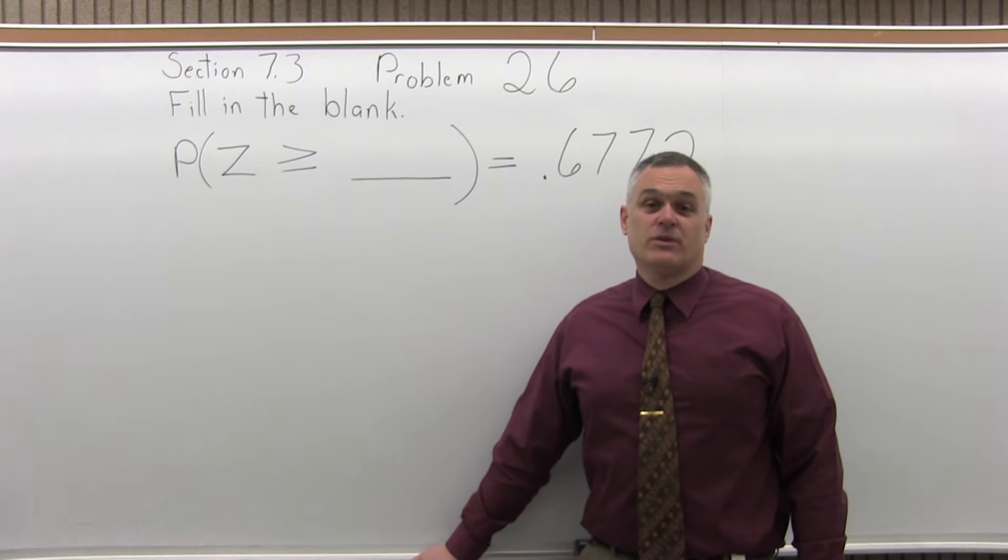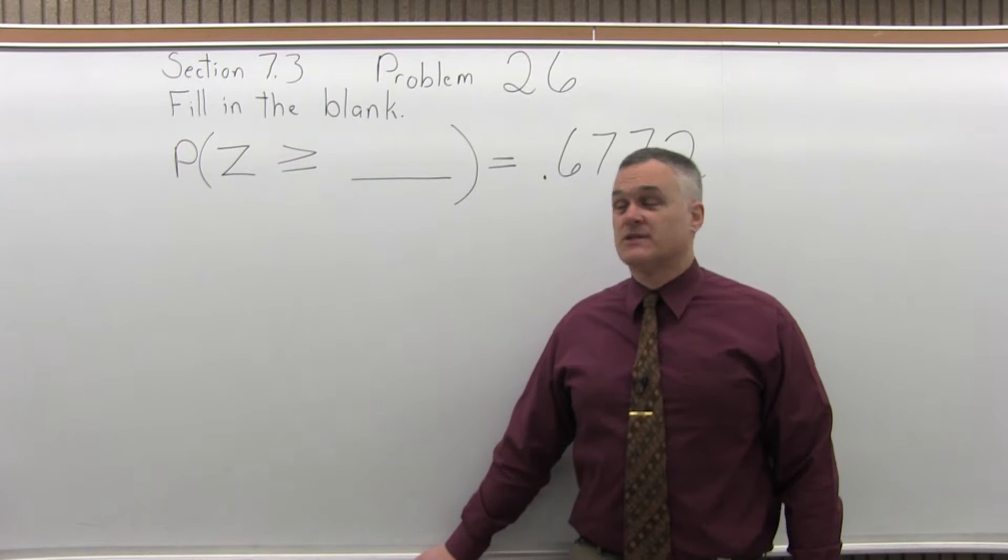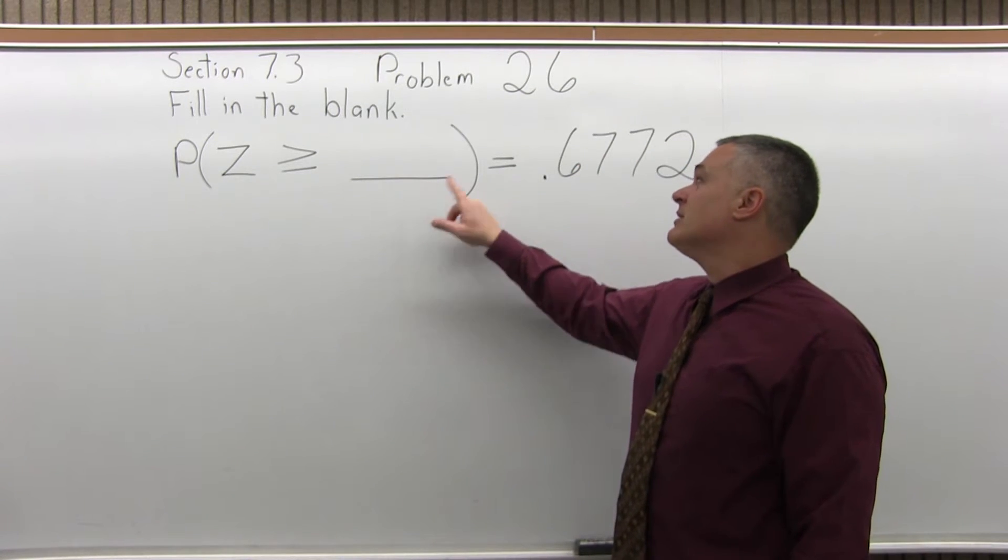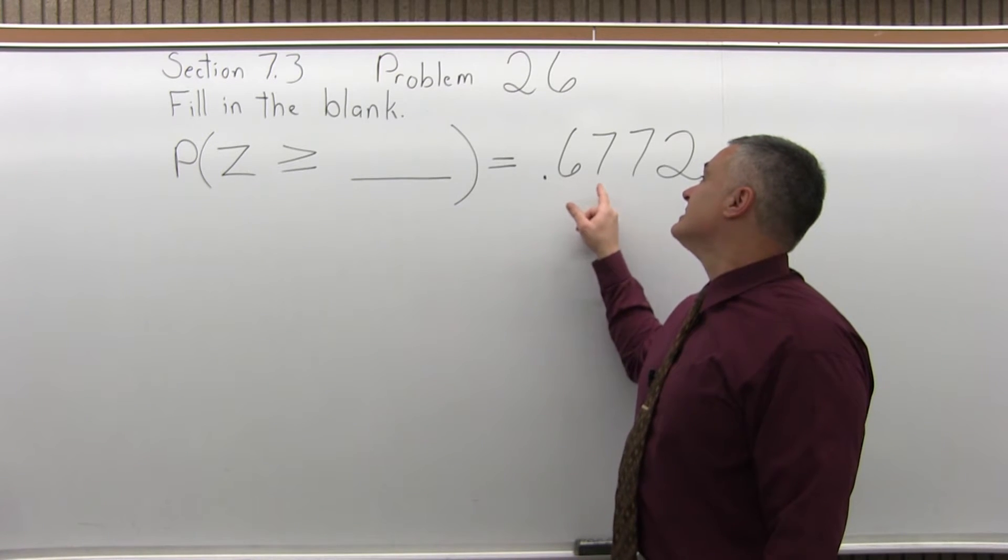This is Section 7.3, Question Number 26. It says fill in the blank: the probability that Z is greater than or equal to blank equals 0.6772.